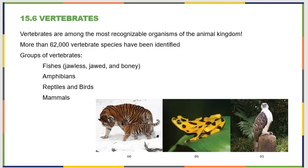The last section is all about vertebrates — the most recognizable animals, since they're what we see and what we're used to seeing. There are about 60,000-plus species that have been identified, and we tend to hear most about those getting ready to go extinct. We study them as fish, amphibians, reptiles, birds, and mammals.